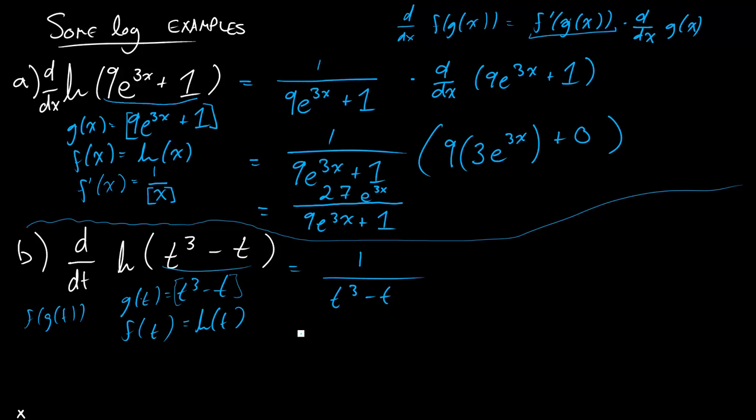But now I need to multiply by the derivative of what was on the inside, right? So t cubed minus t. And so this over here is going to end up being 3t squared minus 1.